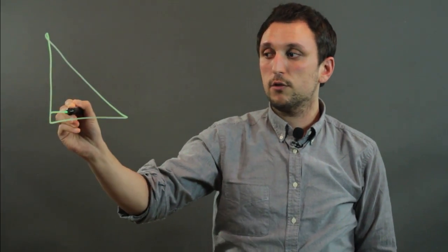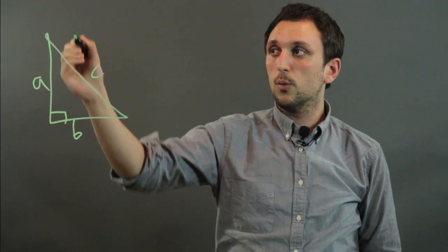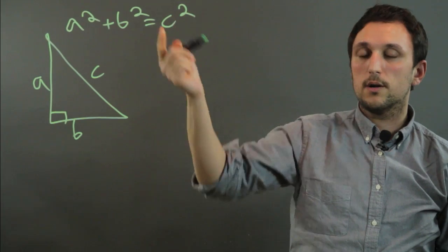Now the Pythagorean theorem is how to find the hypotenuse of any right triangle, C, when you have legs A and B. We say that A squared plus B squared equals C squared.